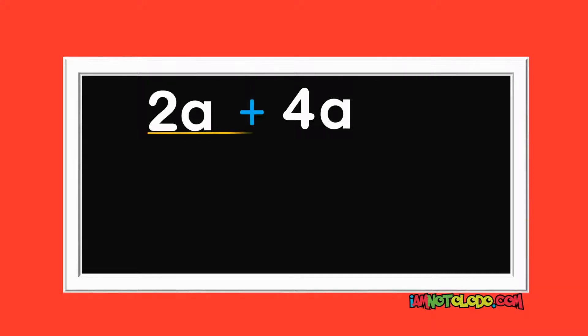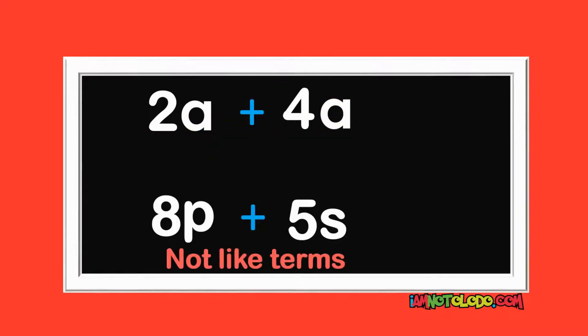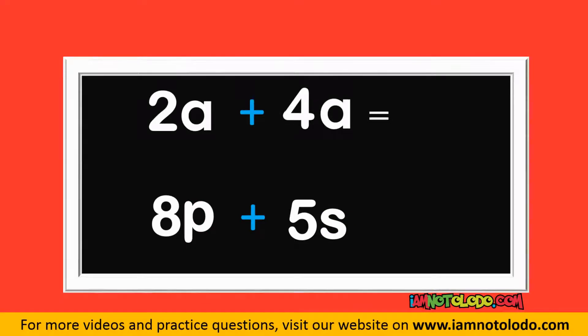In algebra, we call these like terms because they have the same alphabet. Meanwhile, they are not like terms because they do not have the same alphabet. So in algebra, you can add this. Just add the numbers, then write down the alphabet. In this case, we cannot add because they do not have the same alphabet.